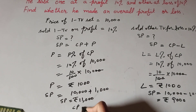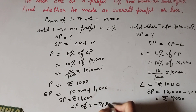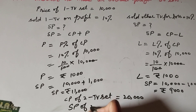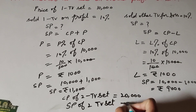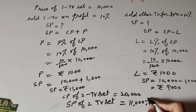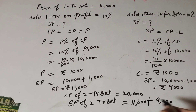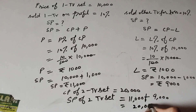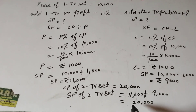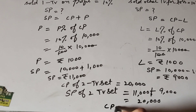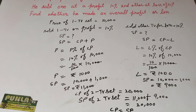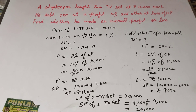The cost price of one TV is 10,000, so the cost price of two TV sets is rupees 20,000. The total selling price of two TV sets equals 11,000 plus 9,000, which is equal to rupees 20,000. Since cost price equals selling price, in the overall transaction the shopkeeper neither gets a profit nor a loss.